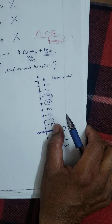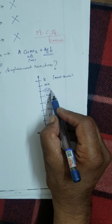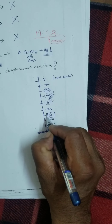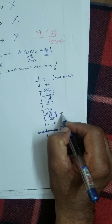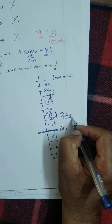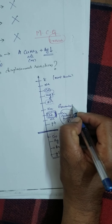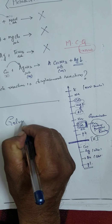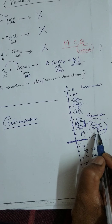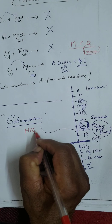Now, one thing you have to remember: calcium can displace magnesium. For iron, it is coated with zinc to protect against rusting. This is called galvanization — the coating of zinc on iron to prevent rusting is called galvanization.